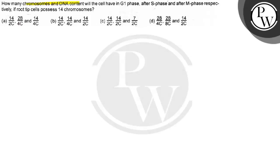How many chromosomes and DNA content will the cell have in G1 phase, after S phase, and after M phase respectively, if root tip cells possess 14 chromosomes?